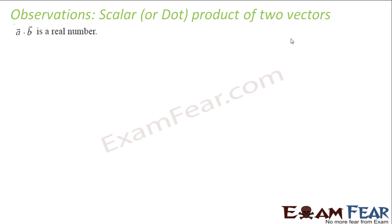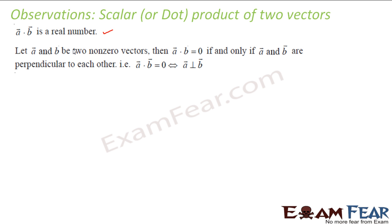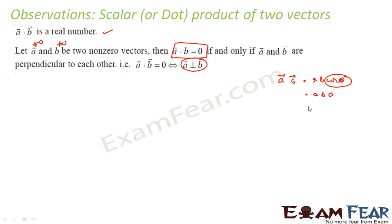Let us have some observations. The first observation is that the scalar product is a real number — it gives a scalar output. If A and B are non-zero vectors, then A dot B is zero if and only if they are perpendicular. Because A and B have some non-zero value, and A dot B equals AB cos theta — if theta is 90 degrees, this becomes zero, and the whole thing becomes zero. So the only possibility where A dot B is zero for non-zero vectors is when A is perpendicular to B.